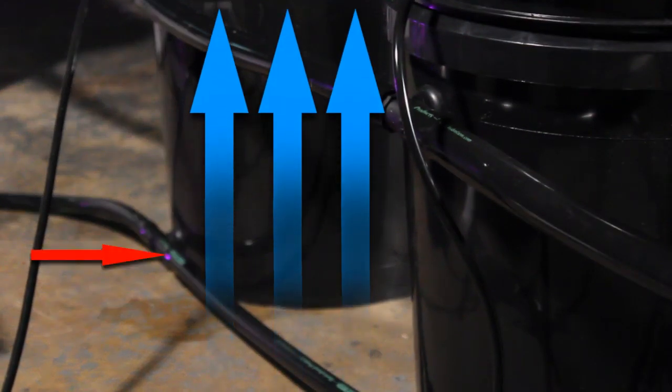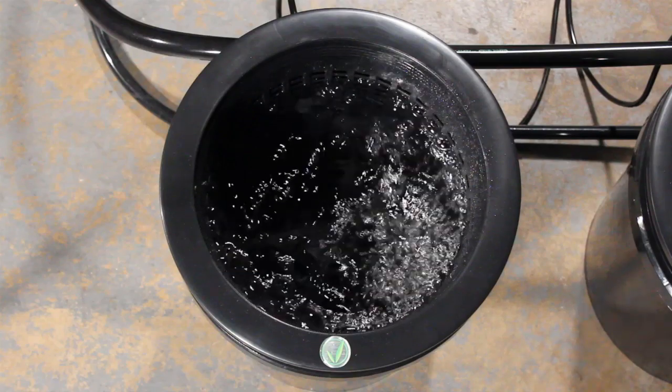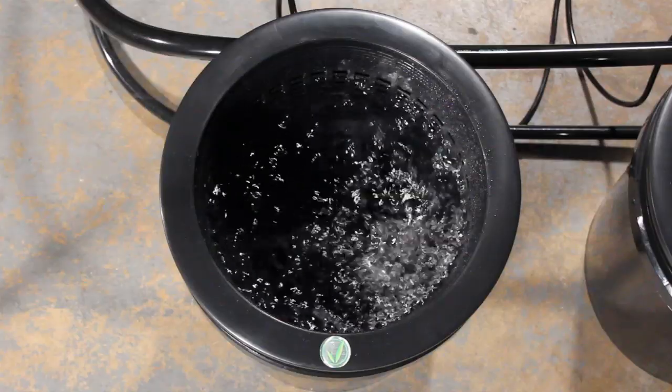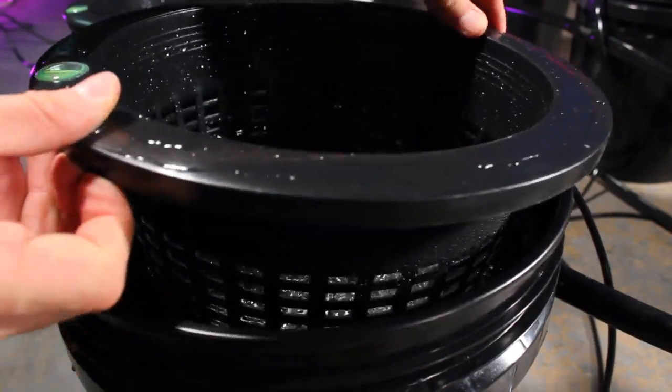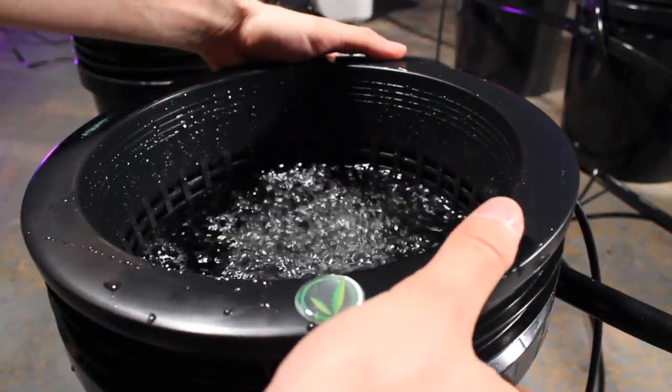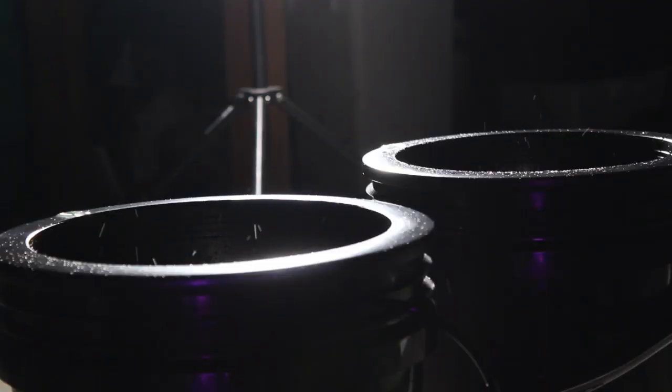The patented flow of water from bottom to top creates even nutrient distribution and prevents common growing issues such as root rot. And the snap-in net basket with a 5-gallon bucket gives you plenty of room to grow thick, hardy root systems.